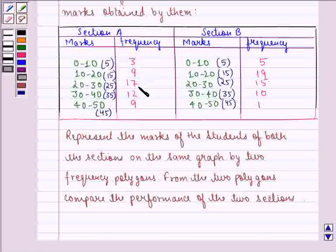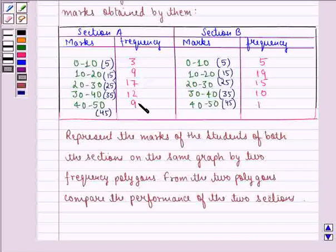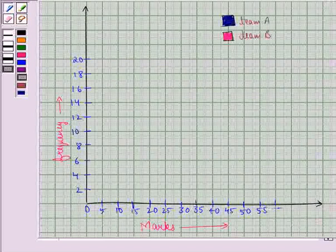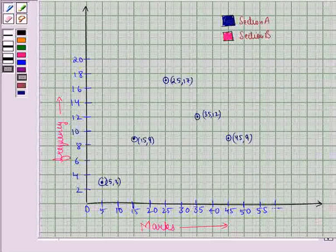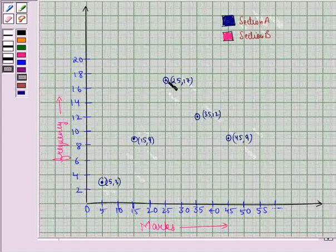(25, 17), (35, 12), (45, 9). So let us plot the points for section A. So these are the points for the section A. Now we join these points to obtain a frequency polygon. Like this we join all these points.